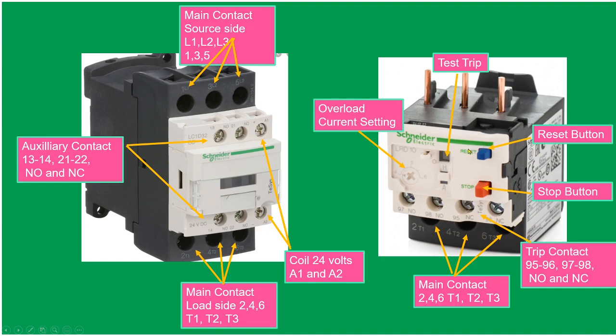The next one is the overload relay. The overload relay here has overload current setting. If we are going to increase the current, we can adjust this one using a screwdriver. Test trip: if we're going to try to test the overload to see if it's working or not, we just push this one. This one is the reset button. If our overload trips, we're going to reset this one after a few minutes. If we're going to stop the motor, we can also press this red button and the motor will stop.